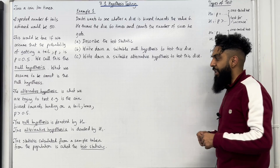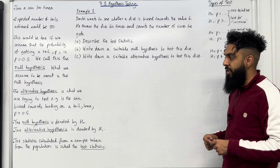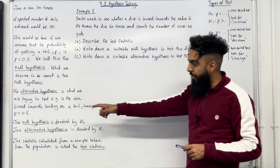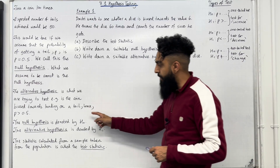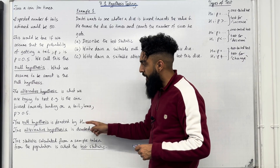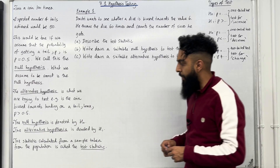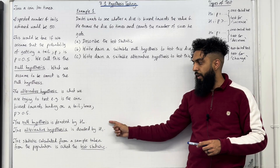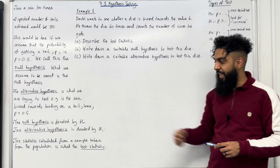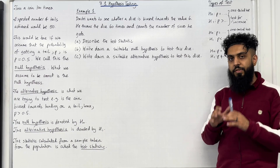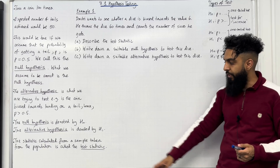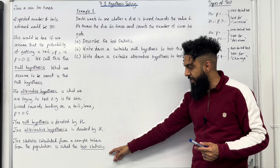Now let's have a look at some important notation. The null hypothesis is denoted by H₀. The alternative hypothesis is denoted by H₁. The statistic calculated from a sample taken from a population is called the test statistic.